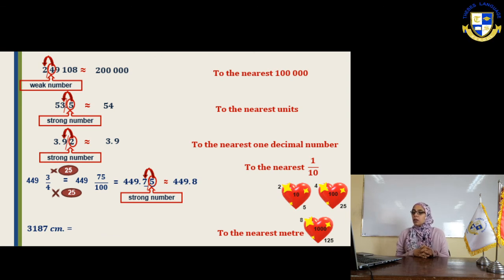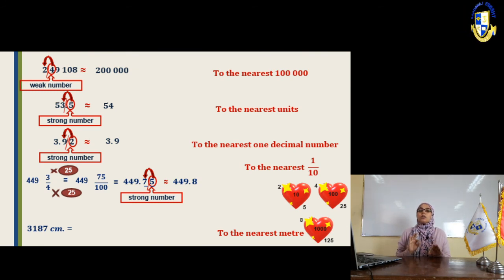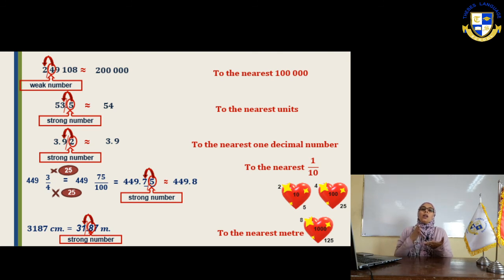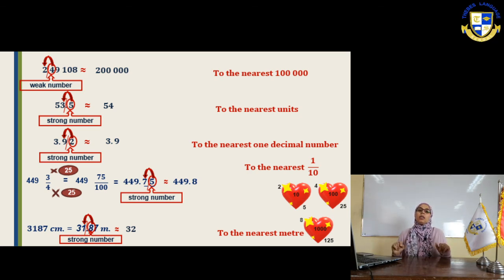Last example: 3,187 centimeters. We want to convert it to the nearest meter. First, convert centimeters to meters by dividing by 100 — put the decimal point two places from the right: 31.87 meters. Now approximate to the nearest unit (whole number). The units digit is 1; look to the right — it's 8. Eight is strong, so increase 1 to 2. The answer is approximately 32 meters.